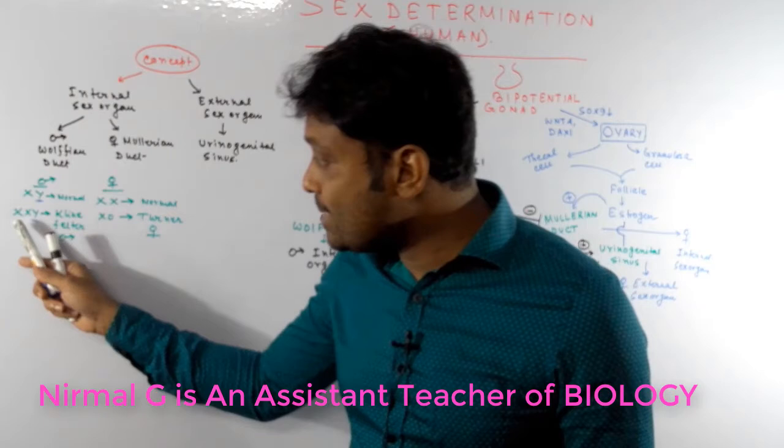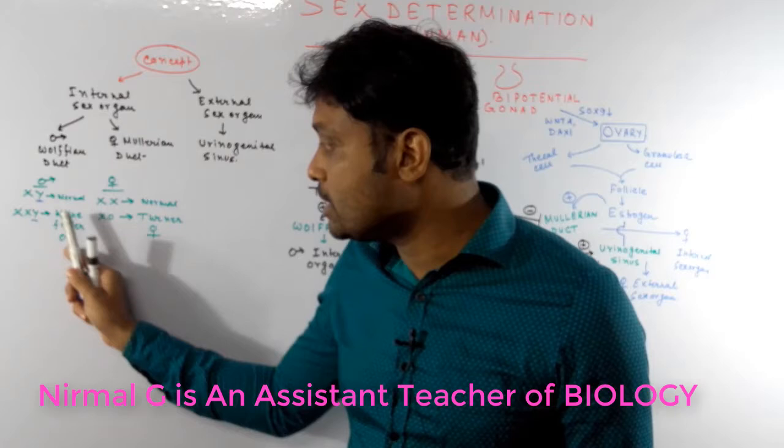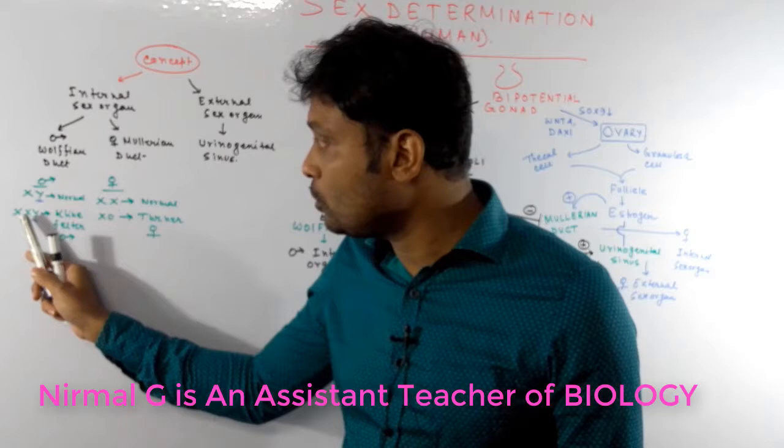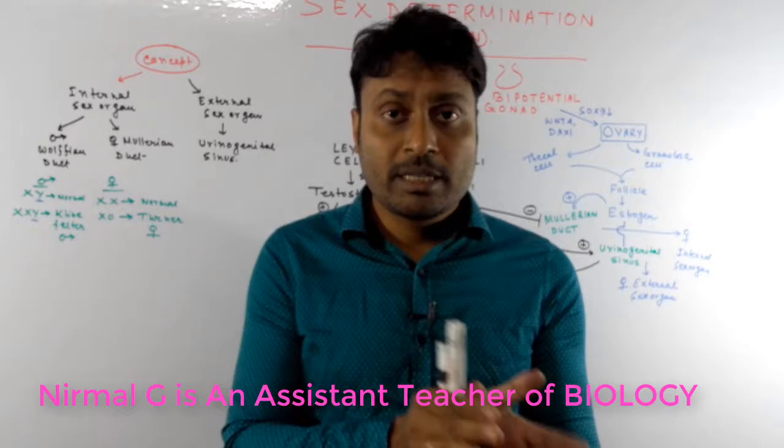The X chromosome has no role in the determination of sex in humans. For example, the Klinefelter male has the genotype XXY and will develop into a male, and the Turner female has the genotype X0. Although two X chromosomes may be present, the X chromosome has no role in sex determination.